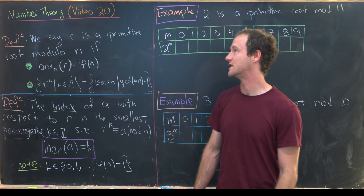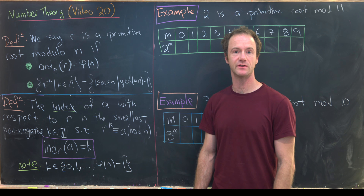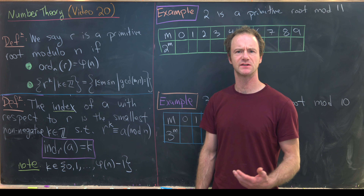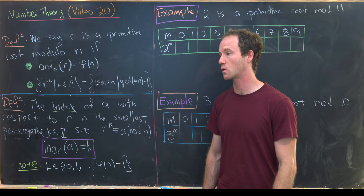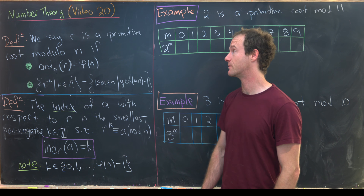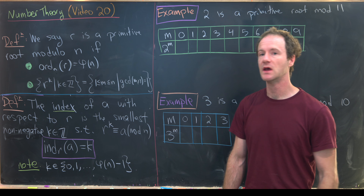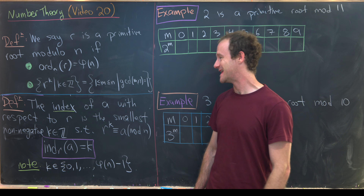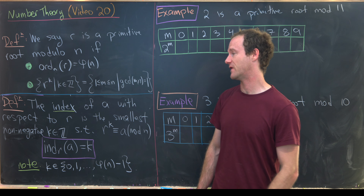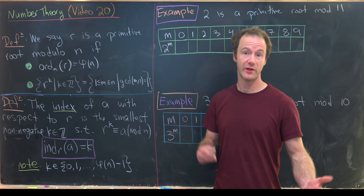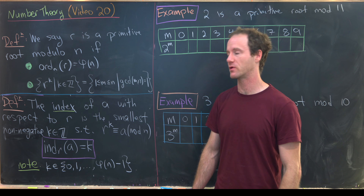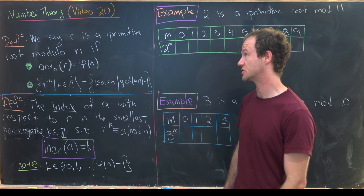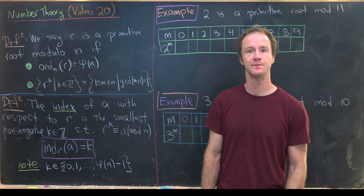This is the 20th in a series of videos supporting a course in elementary number theory. Here we're going to talk about the index of a number with respect to a primitive root modulo n.